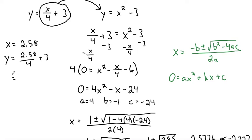That would be y is equal to 2.58 divided by 4 plus 3, which equals 3.645. Rounding that to the nearest hundredth would be 3.65. So that would be one coordinate of x comma y would be 2.58 comma 3.65.